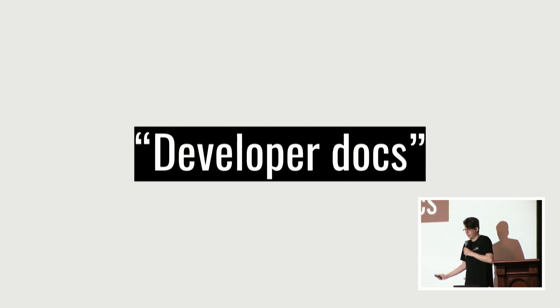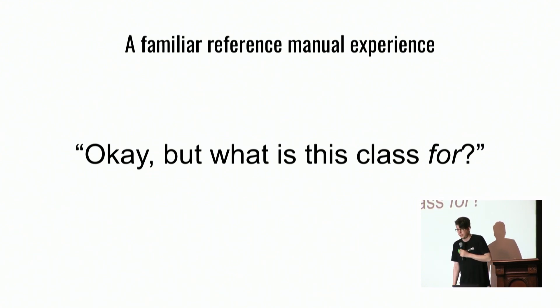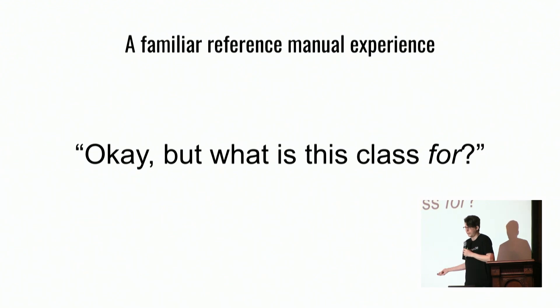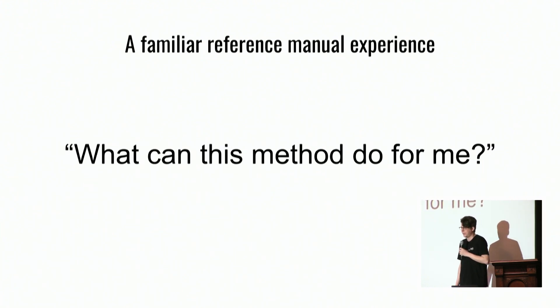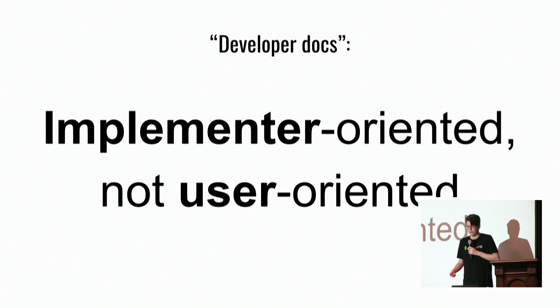A familiar experience when using a reference manual is seeing a lot of information — a lot of words, links, and stuff — but still asking yourself: what is this for? What is this method? What can this method do for me? My observation has been that developer docs tend to be implementer-oriented, not user-oriented. The person writing the SDK is also writing the docs, and they write from their own perspective, not the user's.